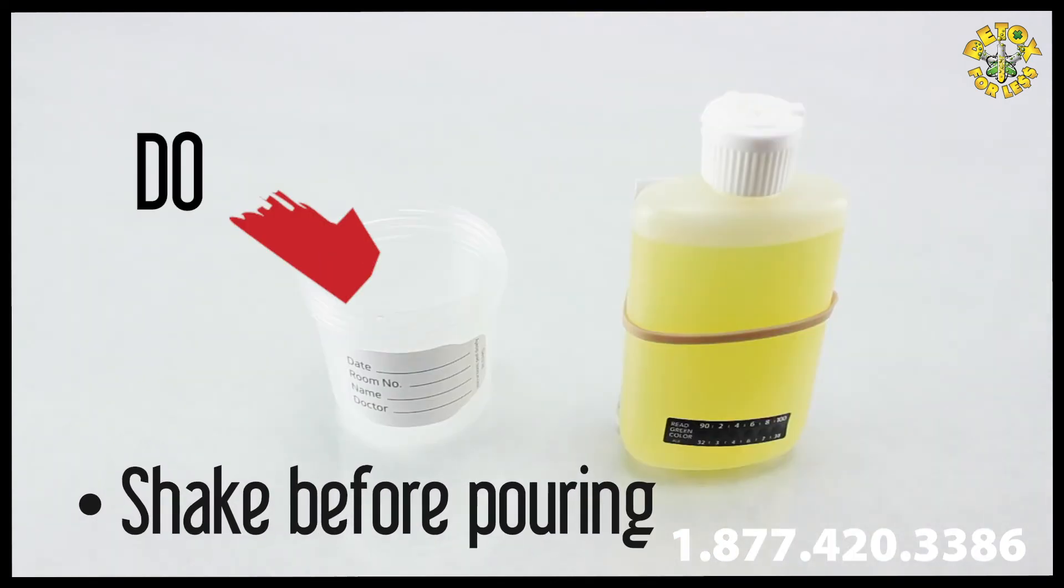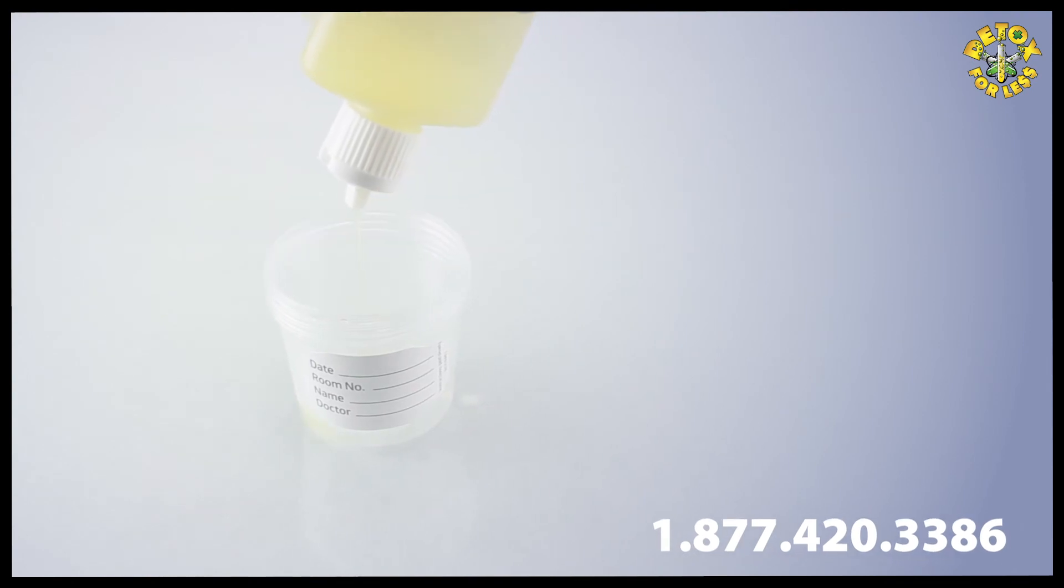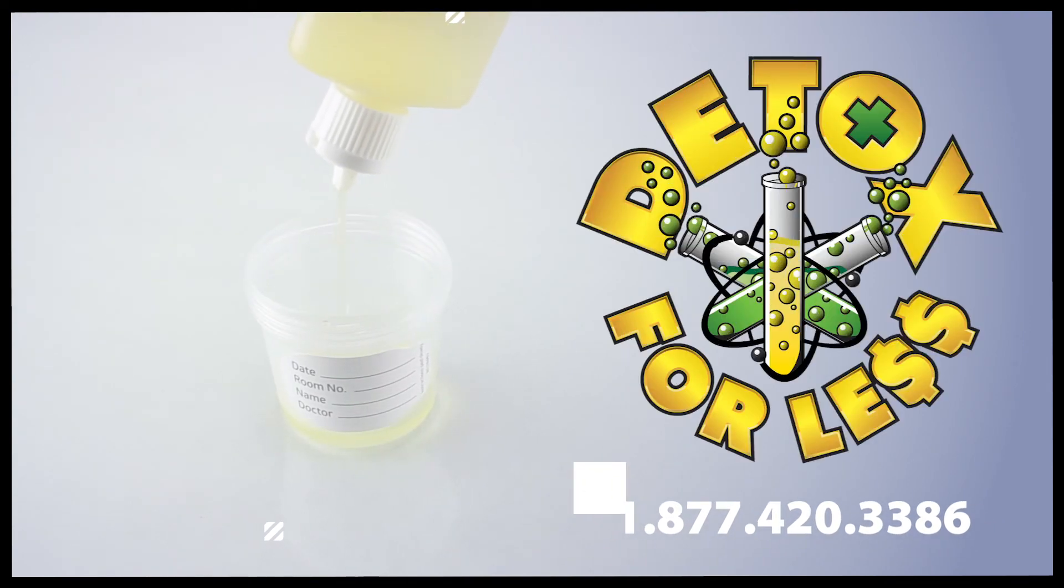When you're ready to use your synthetic urine, give the bottle one last shake. Double check that the temperature strip shows a reading between 90 and 100 degrees. Open the cap and dispense the urine wherever you need it.